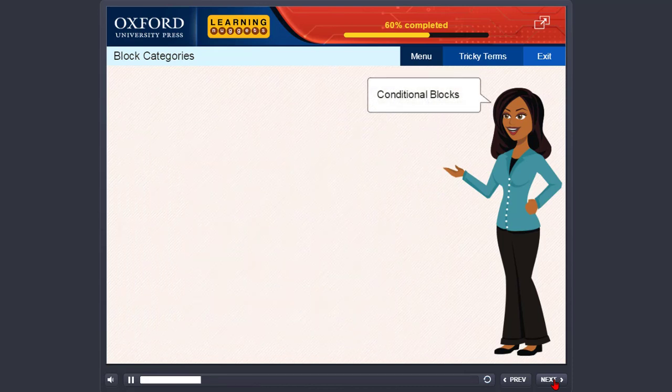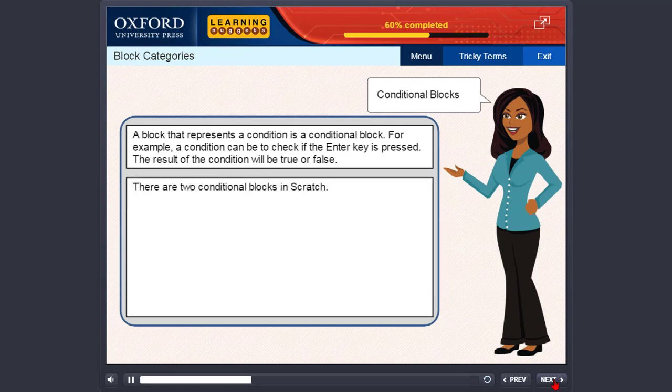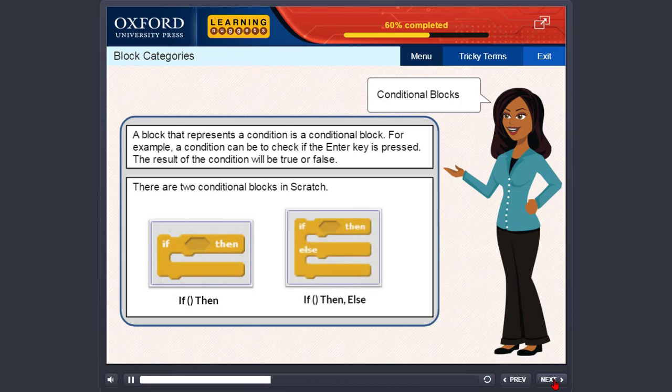Conditional blocks. A block that represents a condition is a conditional block. For example, a condition can be to check if the enter key is pressed. The result of the condition will be true or false. There are two conditional blocks in Scratch: If then and if then else.